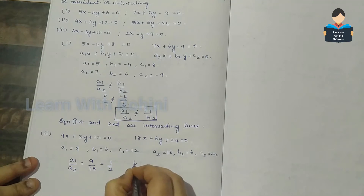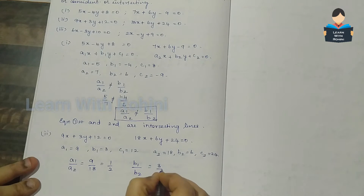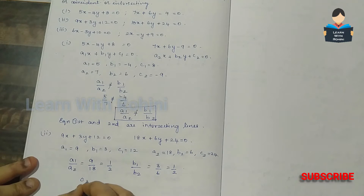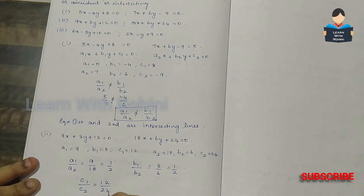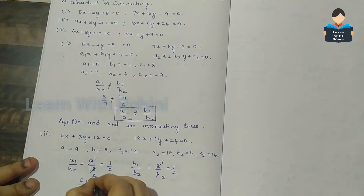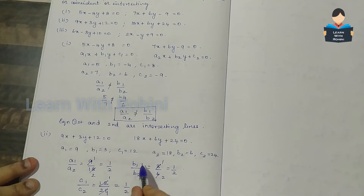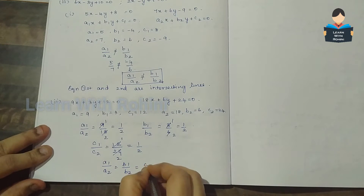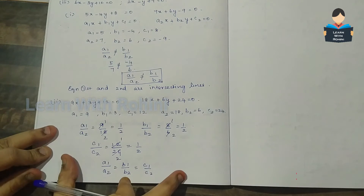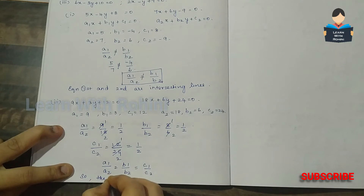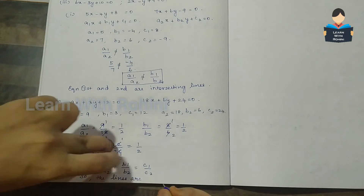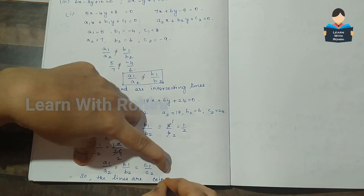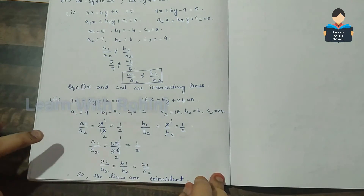a1 by a2 equals 9 by 18, which is equal to 1 by 2. b1 by b2 equals 3 by 6, which is equal to 1 by 2. c1 by c2 equals 12 by 24, which is equal to 1 by 2. Since a1 by a2 equals b1 by b2 equals c1 by c2, the condition is satisfied — the lines are coincident.